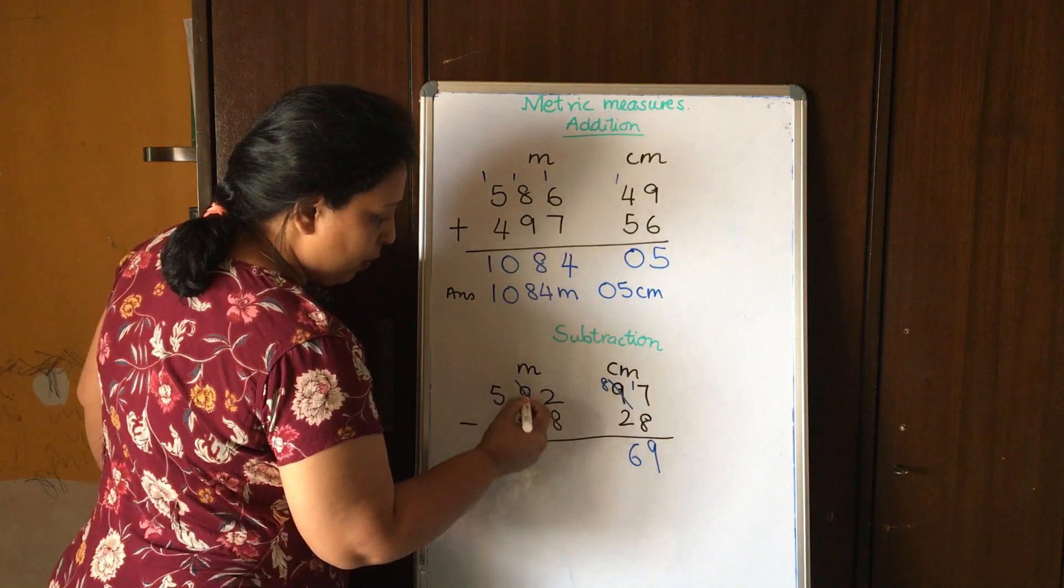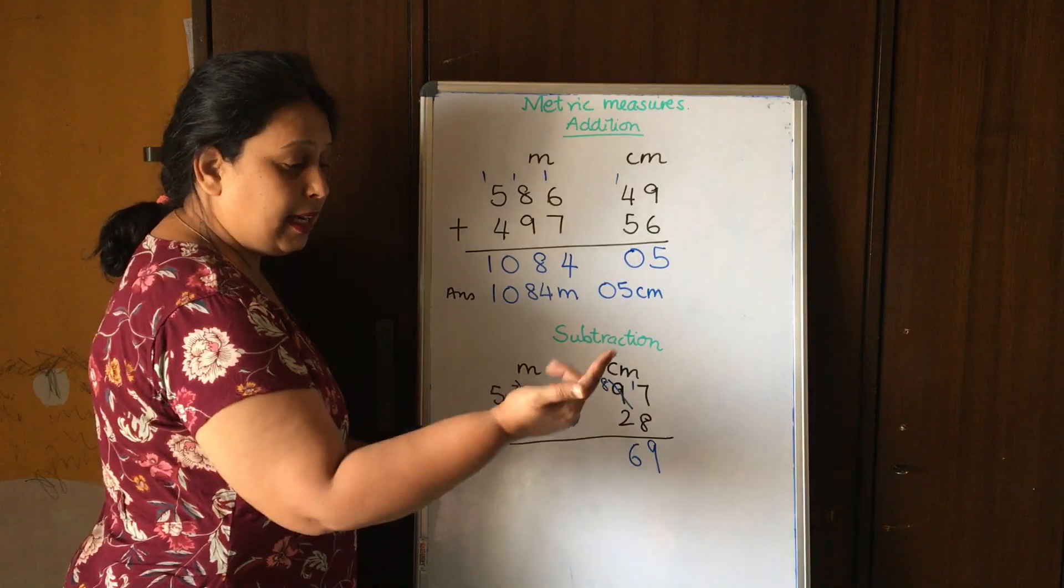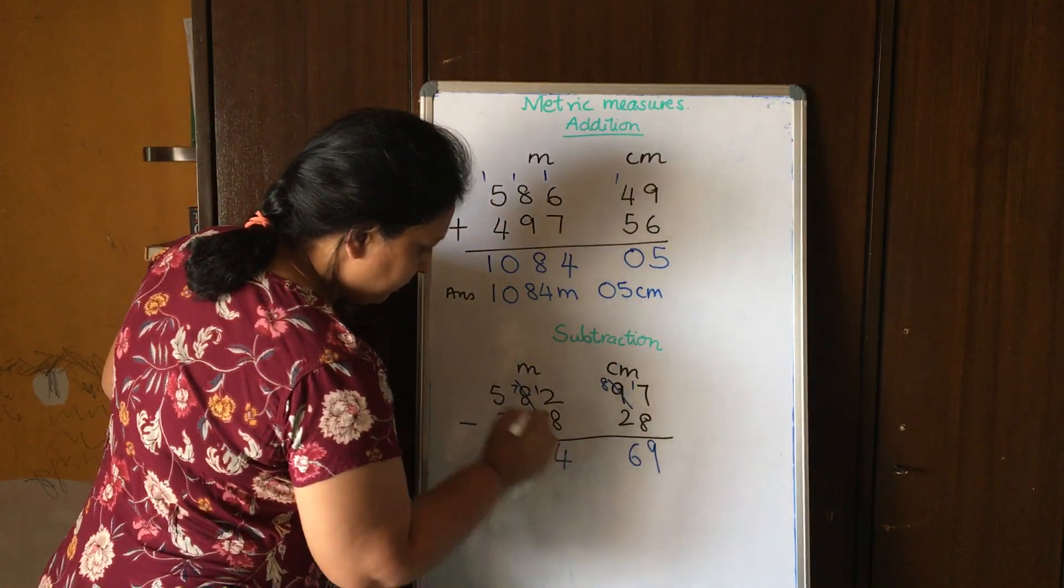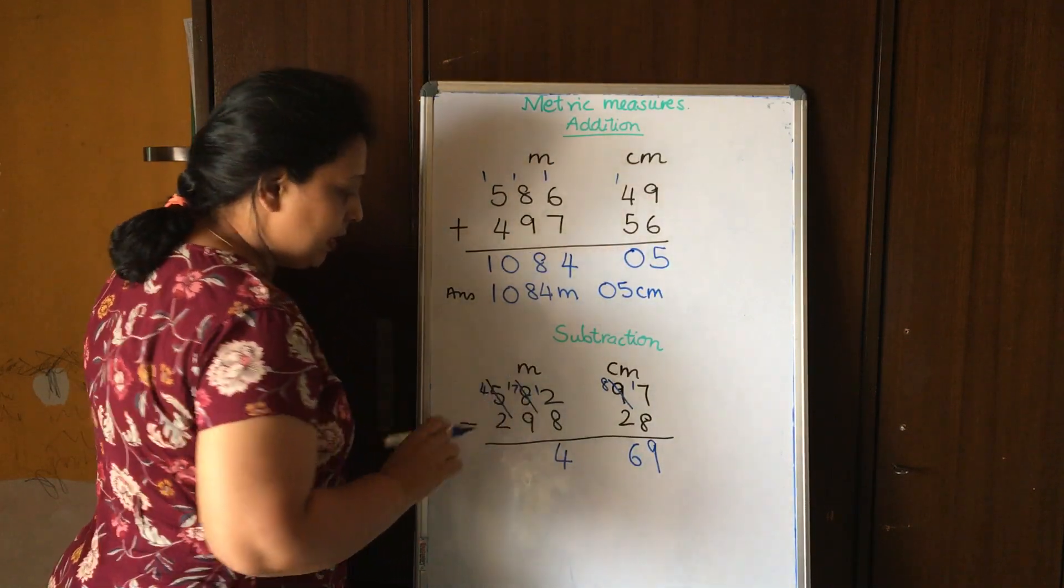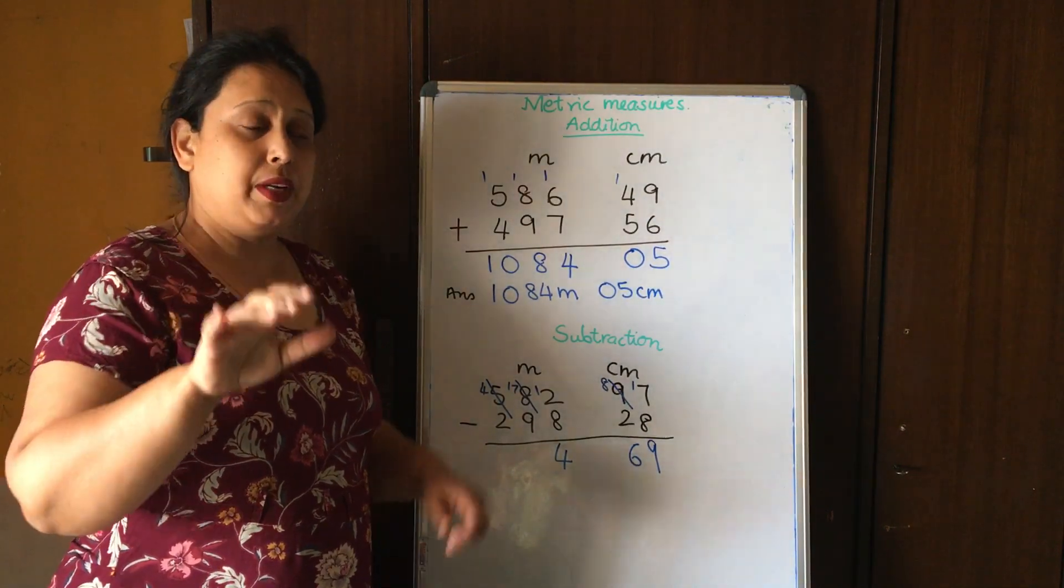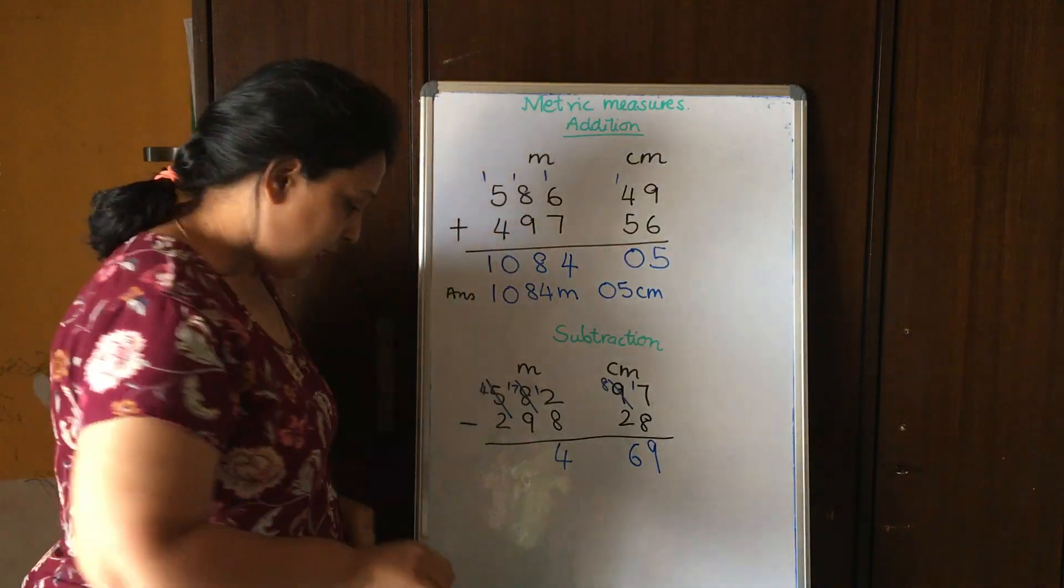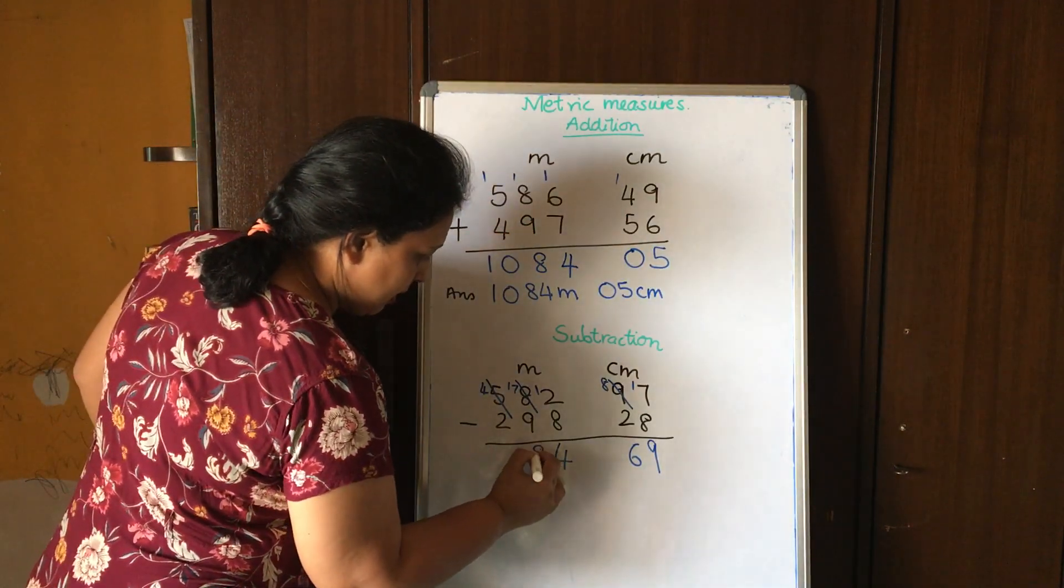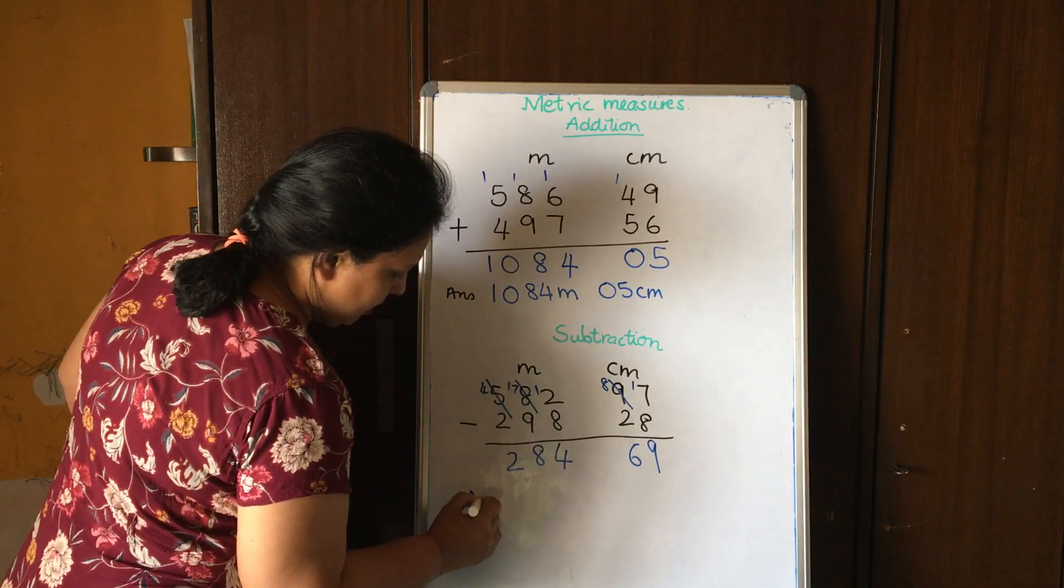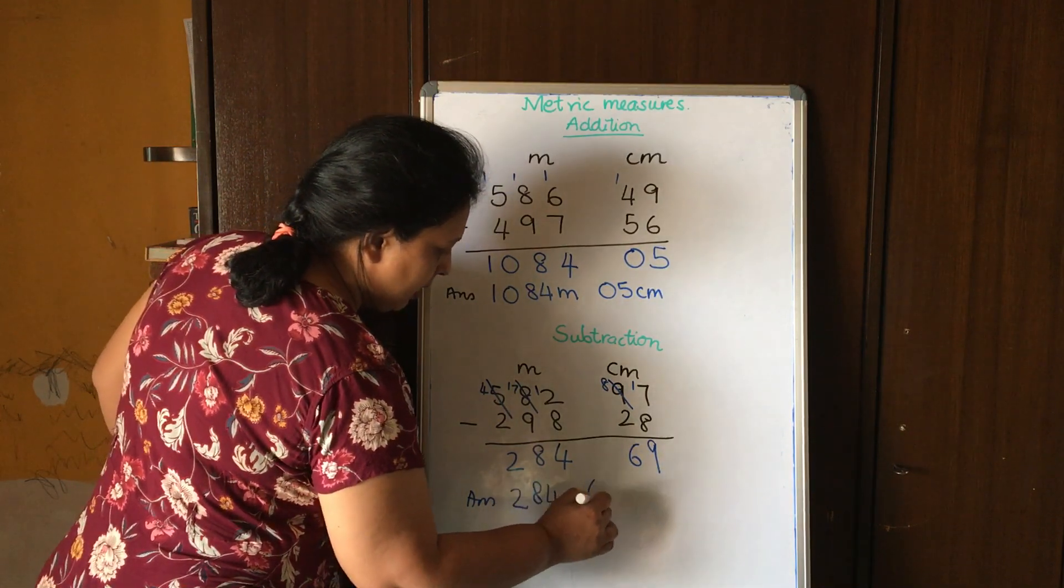And borrow here, I make this seven, carry one here. Eight, nine, ten, eleven, twelve - how many fingers? Four. Again I borrow, seventeen minus nine - nine, ten, eleven, twelve, thirteen, fourteen, fifteen, sixteen, seventeen - how many fingers do I have? Five plus three, eight. So my answer is 284 meters and 69 centimeters.